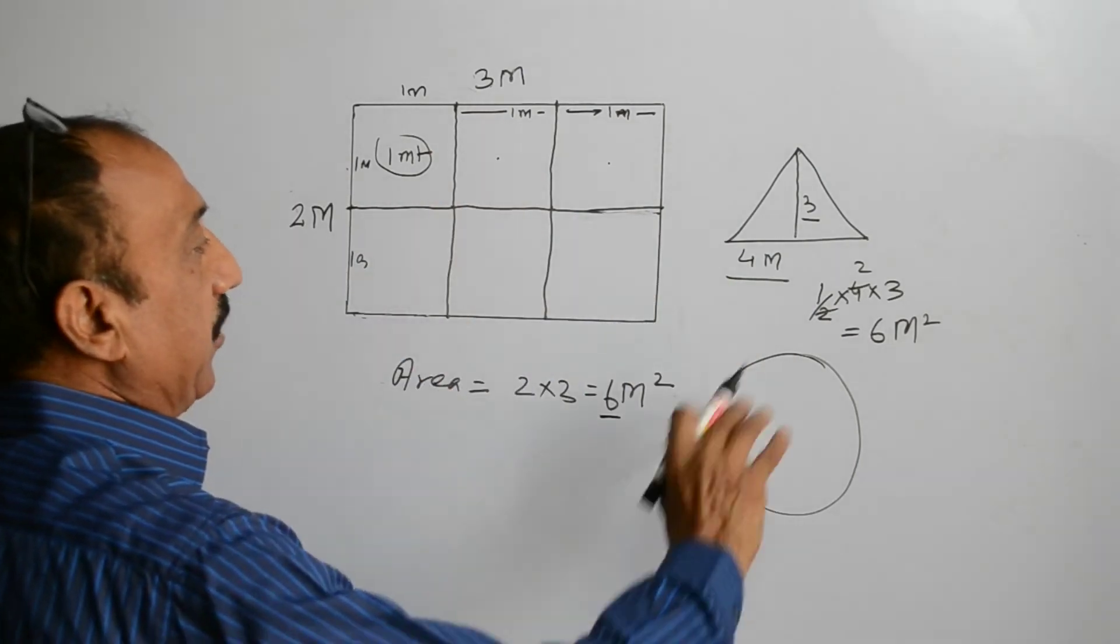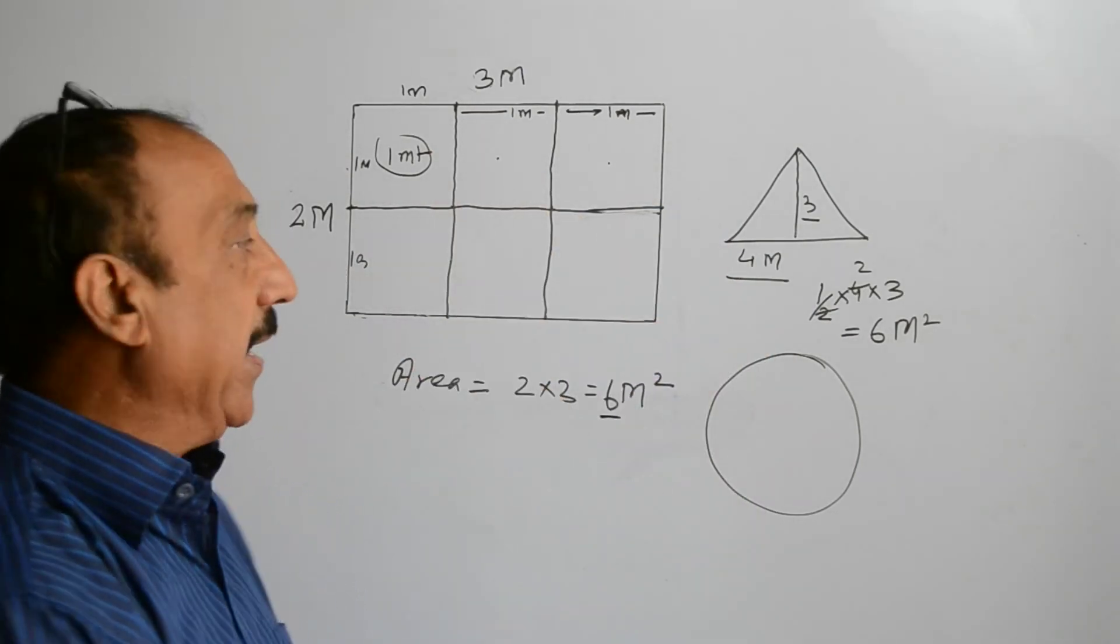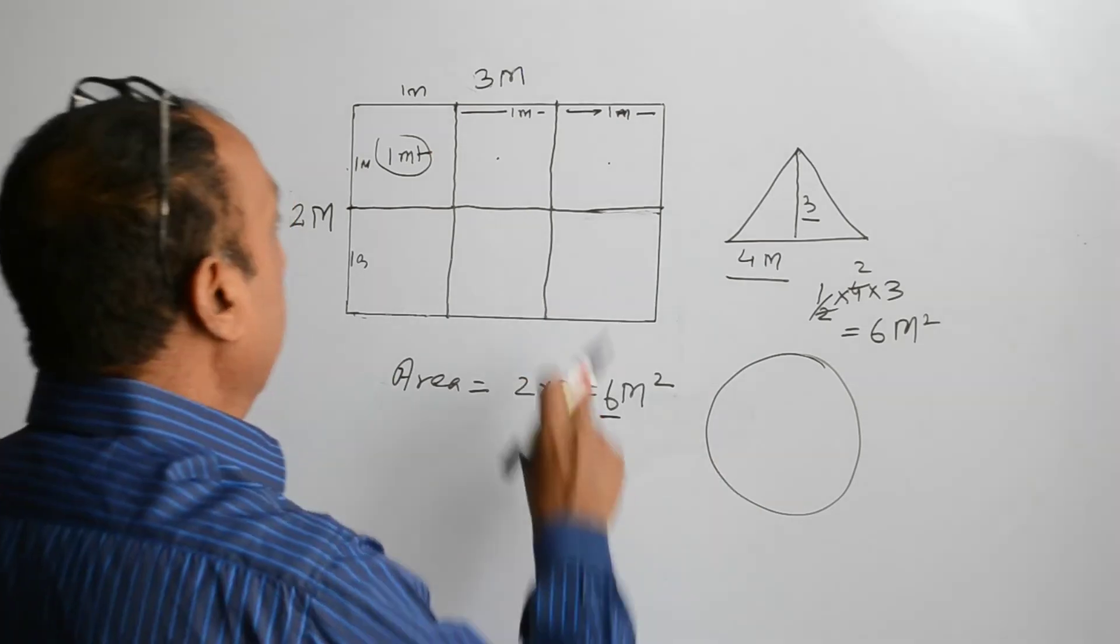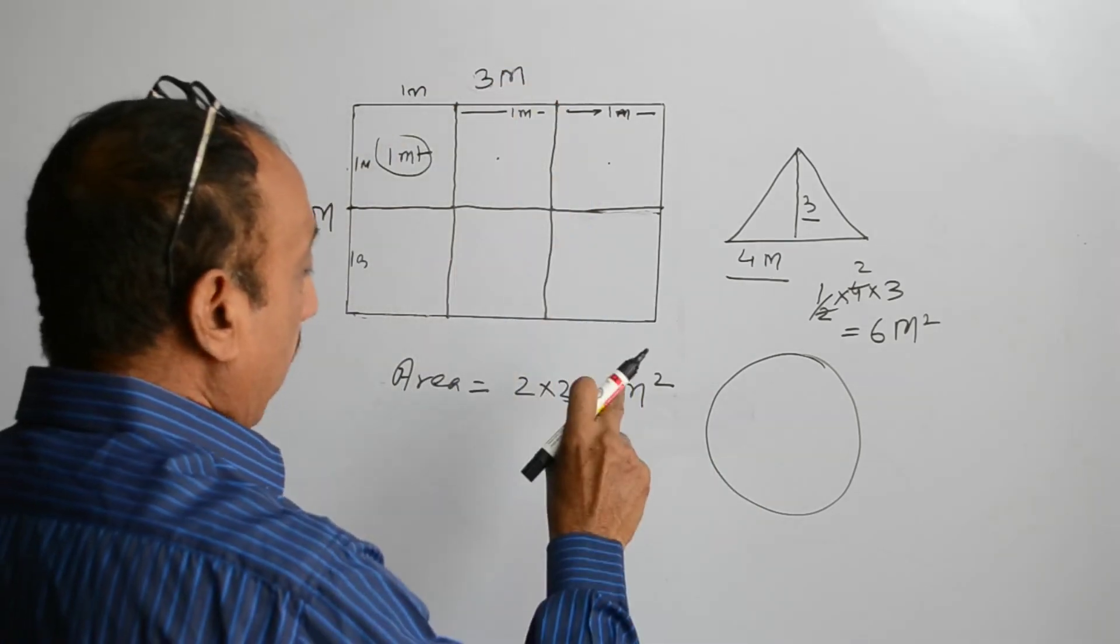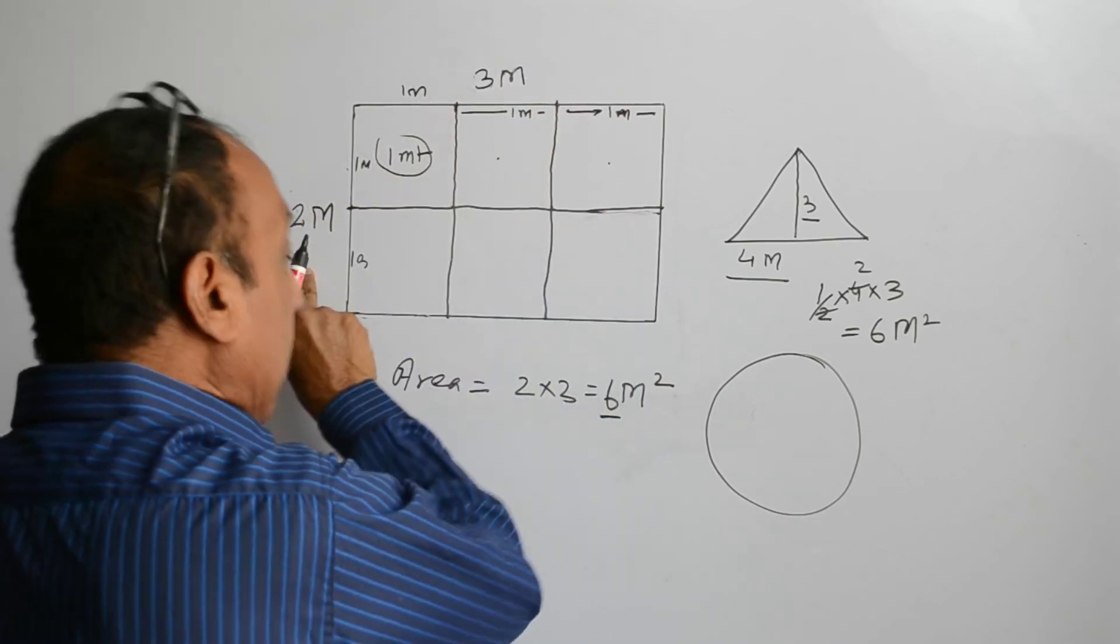So, whatever may be the shape, the area is always described in unit square. If these are in meters, it will be meter square. If these are in feet, it will be feet square. If they are in inches, it will be inches square.